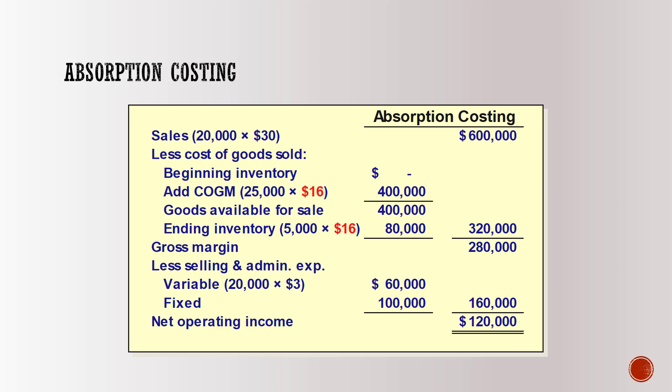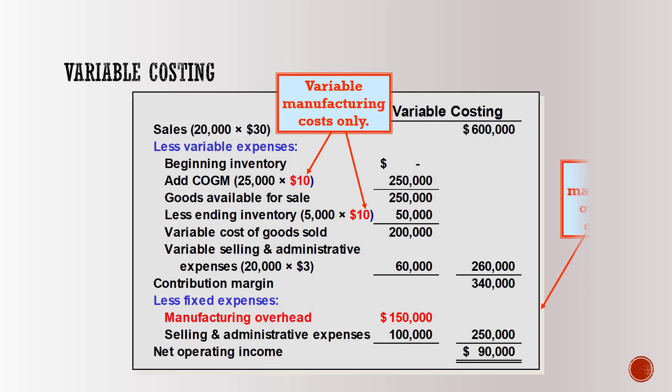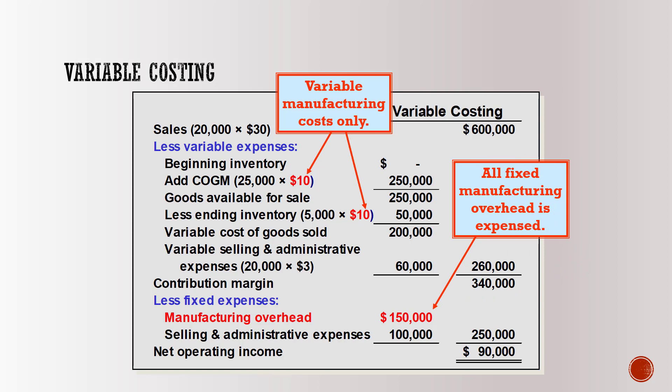Under variable costing, there is no fixed manufacturing overhead included in unit cost. Net operating income of $90,000 is calculated using this method. The cost of goods manufactured of 25,000 units is multiplied by $10 per unit, and ending inventory of 5,000 units is also multiplied by $10 per unit. Under variable costing, the full $150,000 fixed manufacturing overhead is expensed separately — this is the main difference between variable and absorption costing.